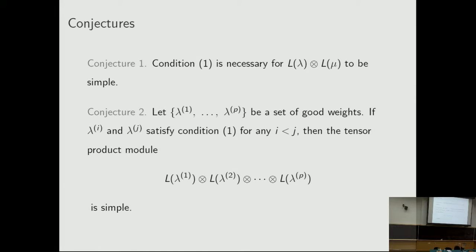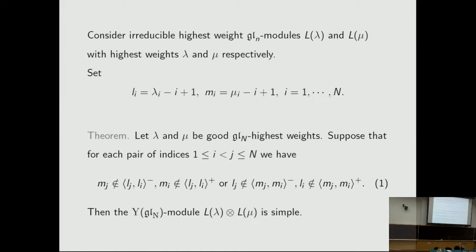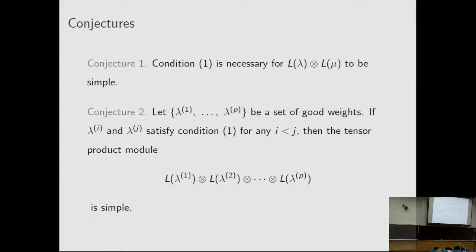I will finish the talk with some conjectures. We have proved that this condition is sufficient for the tensor product to be simple. Conjecture 1: condition 1 is also necessary for the tensor product to be simple. Conjecture 2: let L be a set of good weights; if lambda_i and lambda_j satisfy condition 1 for any i less than j, then the tensor product is simple.